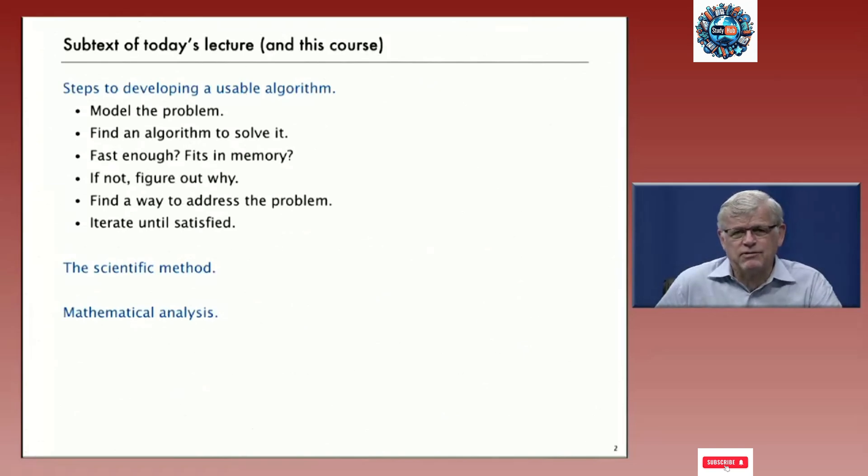In many cases, the first algorithm we come up with would be fast enough, maybe fits in memory, and we'd go ahead and use it. But in many other cases, maybe it's not fast enough or there's not enough memory. So what we do is try to figure out why, find a way to address whatever is causing that problem, find a new algorithm and iterate until we're satisfied.